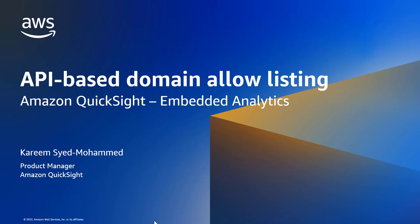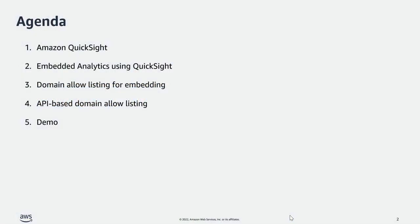Let's look at the agenda quickly. First I'm going to talk to you about what is Amazon QuickSight, then what is Embedded Analytics using QuickSight. Then we will spend a little time on Domain Allow Listing when you are embedding and how the new feature API-based Domain Allow Listing can be used, and then at the end I will give you a small demo.